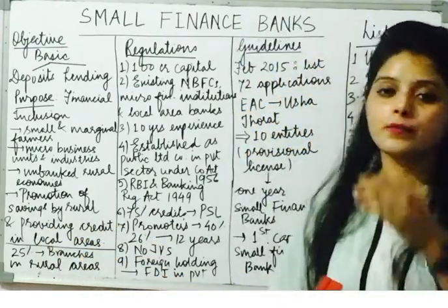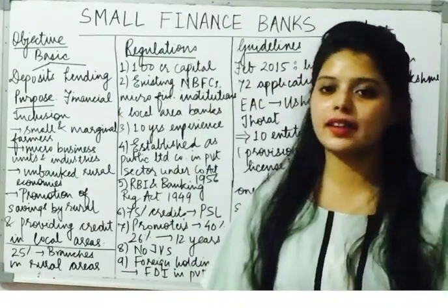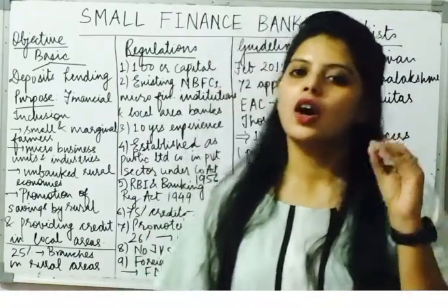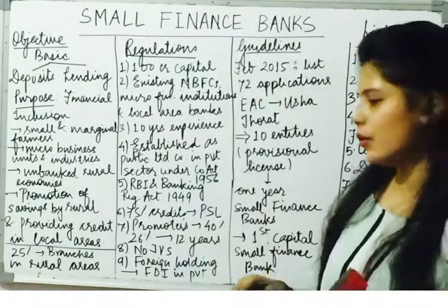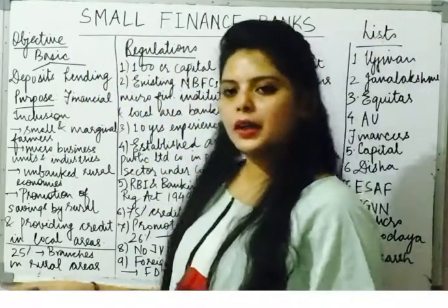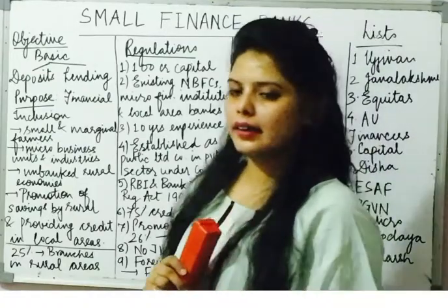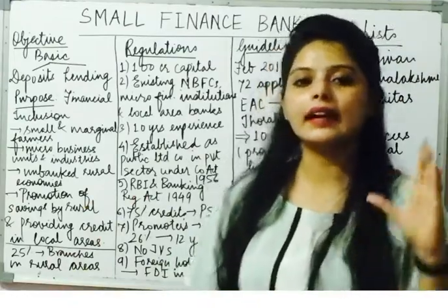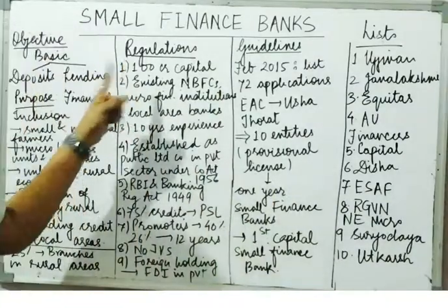Small finance banks provide credit in local areas at a lesser rate of interest compared to money lenders. So in summary, the main objective includes deposits, lending, advances, loans, credit — and the main target sector is the rural and semi-urban sector of the economy. Now let's move on to regulations.